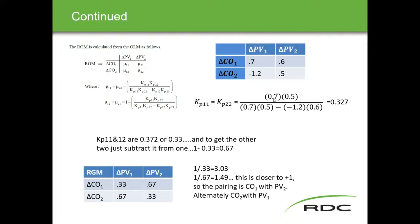Taking the numbers from the previous example and substituting them into the formula, we run them out using the 11/22 formula and get 0.327. We subtract that number from one and that gives us 0.67. Those are the two numbers that go into our relative gain matrix.